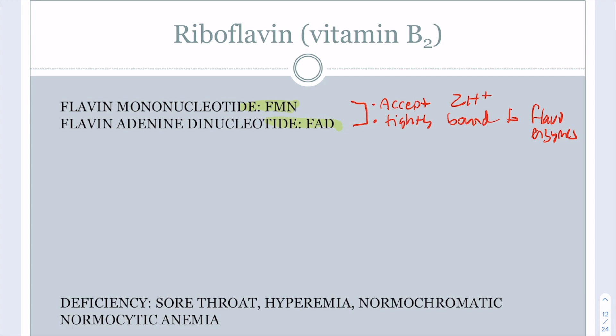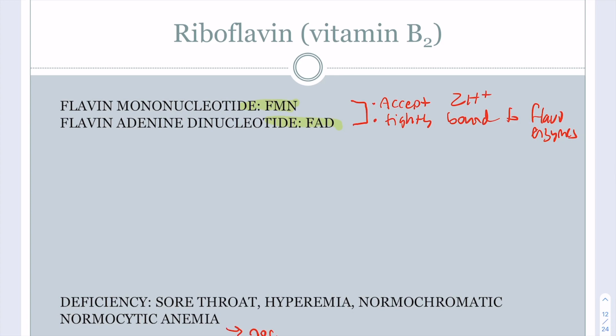Riboflavin deficiency exists but is not as significant as other vitamin deficiencies. You may get a sore throat and hyperemia, and it is usually associated with deficiency of other vitamins as well, not just B2 alone. You will also get normochromic normocytic anemia, meaning normal red blood cells but too few.